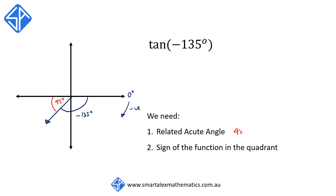Using the acronym "all stations to central", we find that tan is positive in the third quadrant. Putting all this together, tan negative 135 degrees is the same as positive tan 45 degrees.